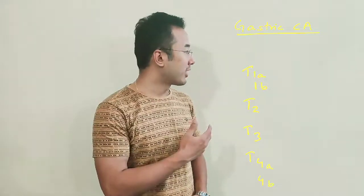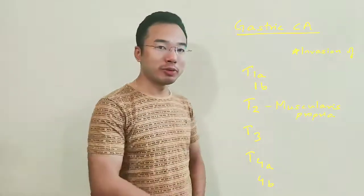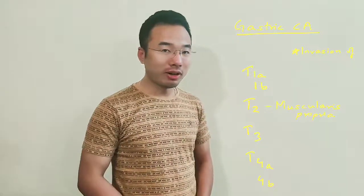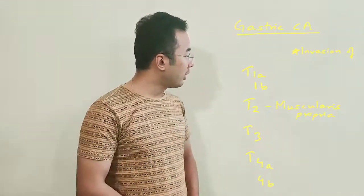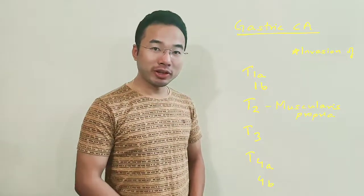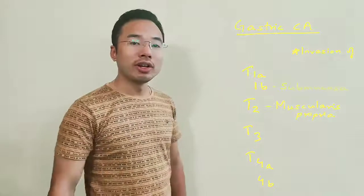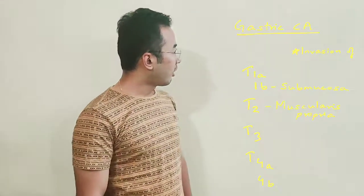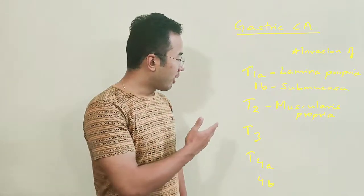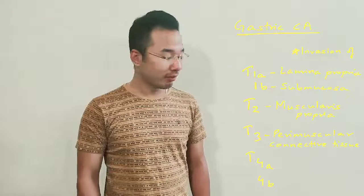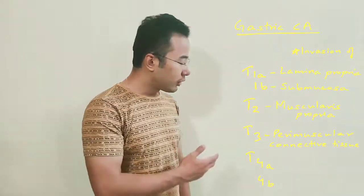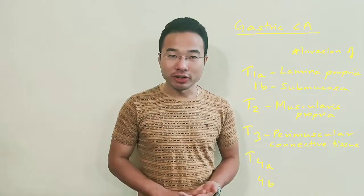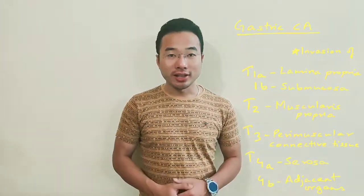For stomach cancer: T2 is muscularis propria. The layer before muscularis propria is submucosa, so T1b is invasion of the submucosa, and T1a is invasion of the lamina propria. T3 is perimuscular connective tissue invasion. T4a is invasion of the serosa and T4b is invasion of adjacent organs.